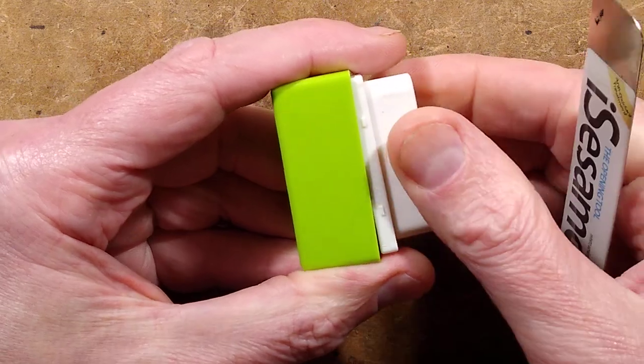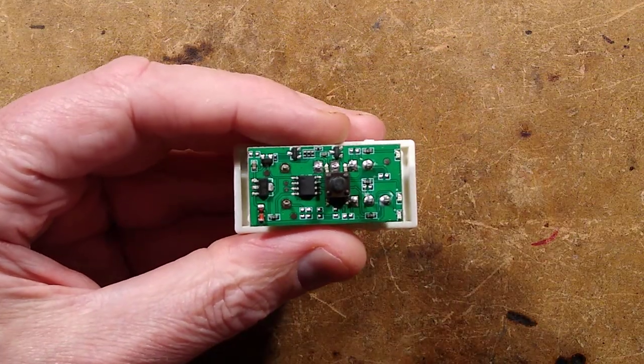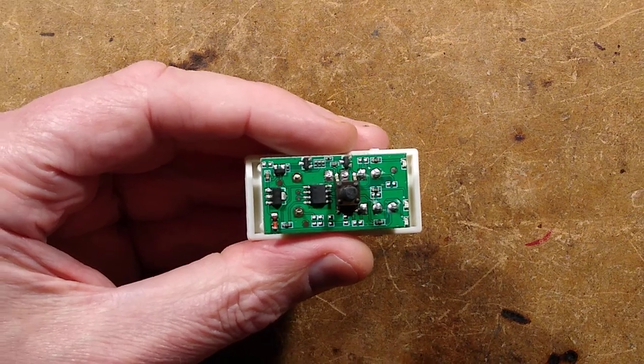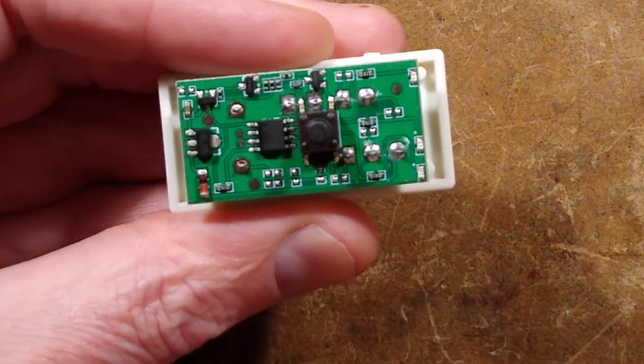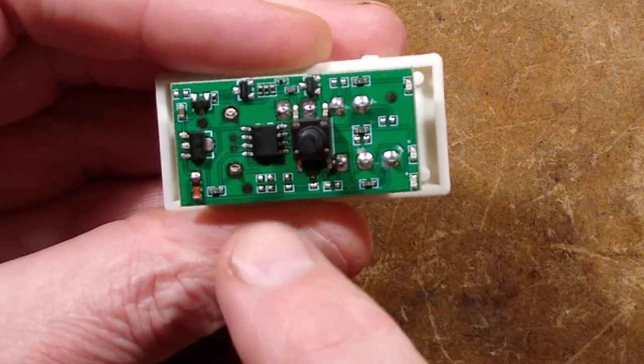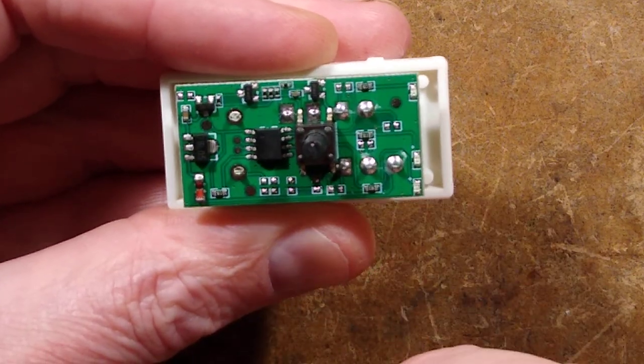So like many of these things, it comes apart quite easily. It has a fair amount of circuitry, quite a lot of circuitry. I'm going to guess this is a microcontroller. That looks like a voltage regulator. What are these transistors for?